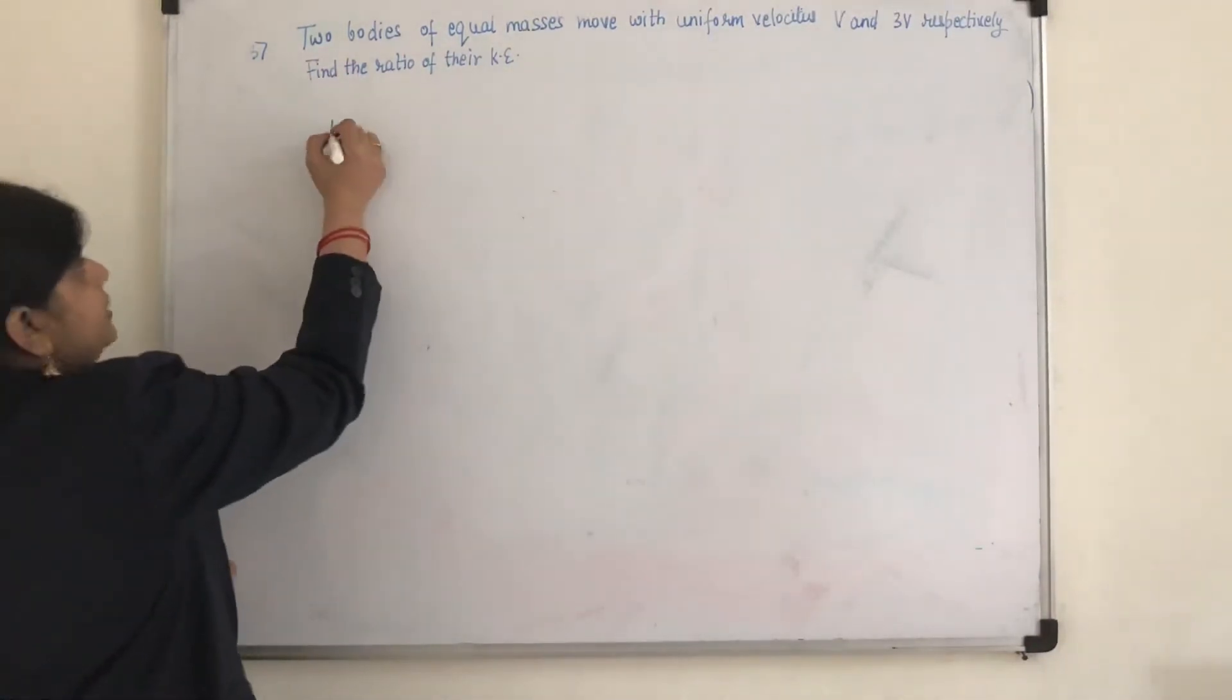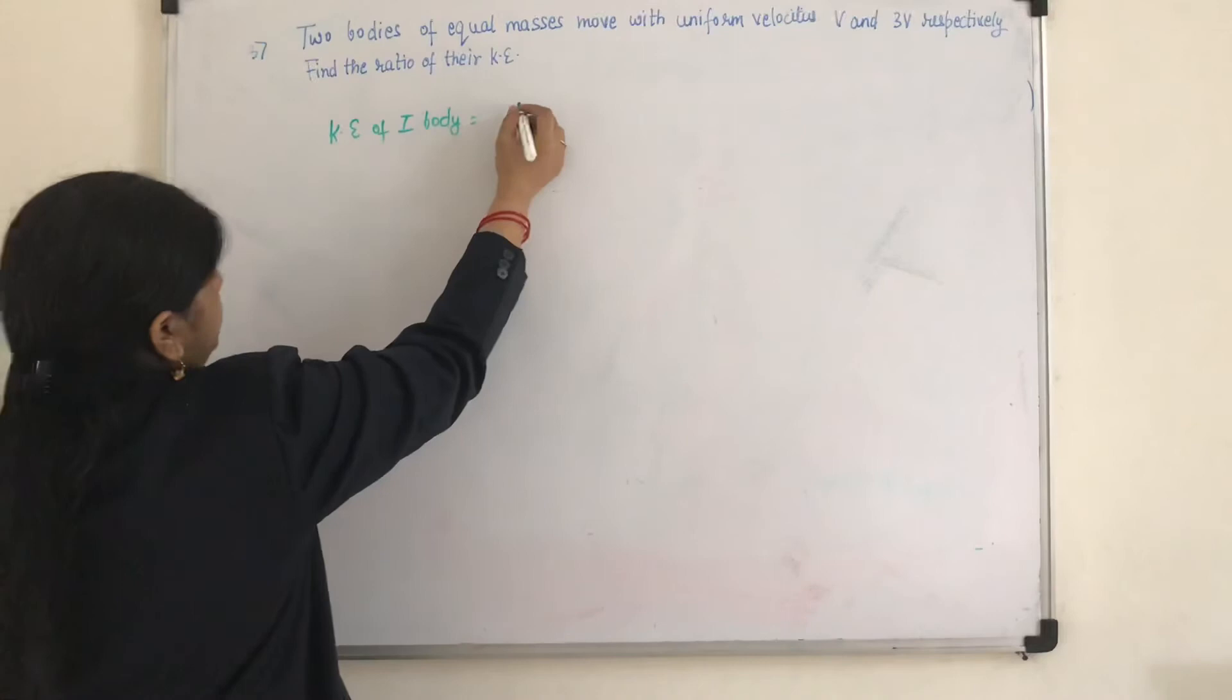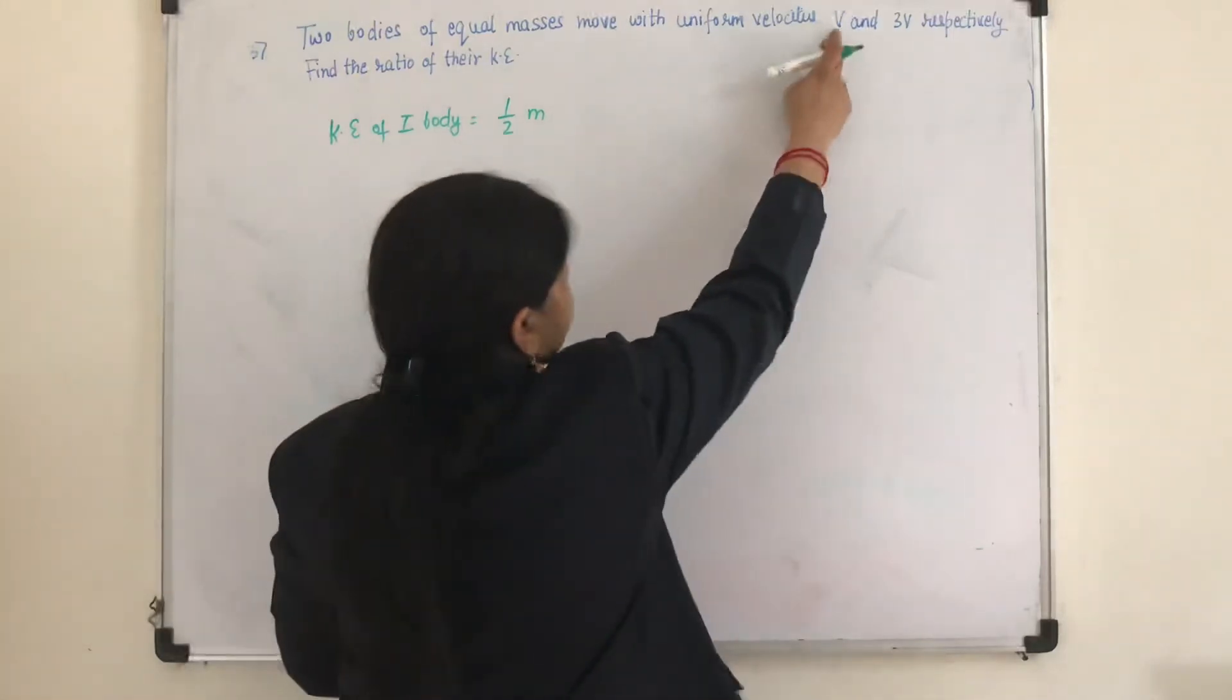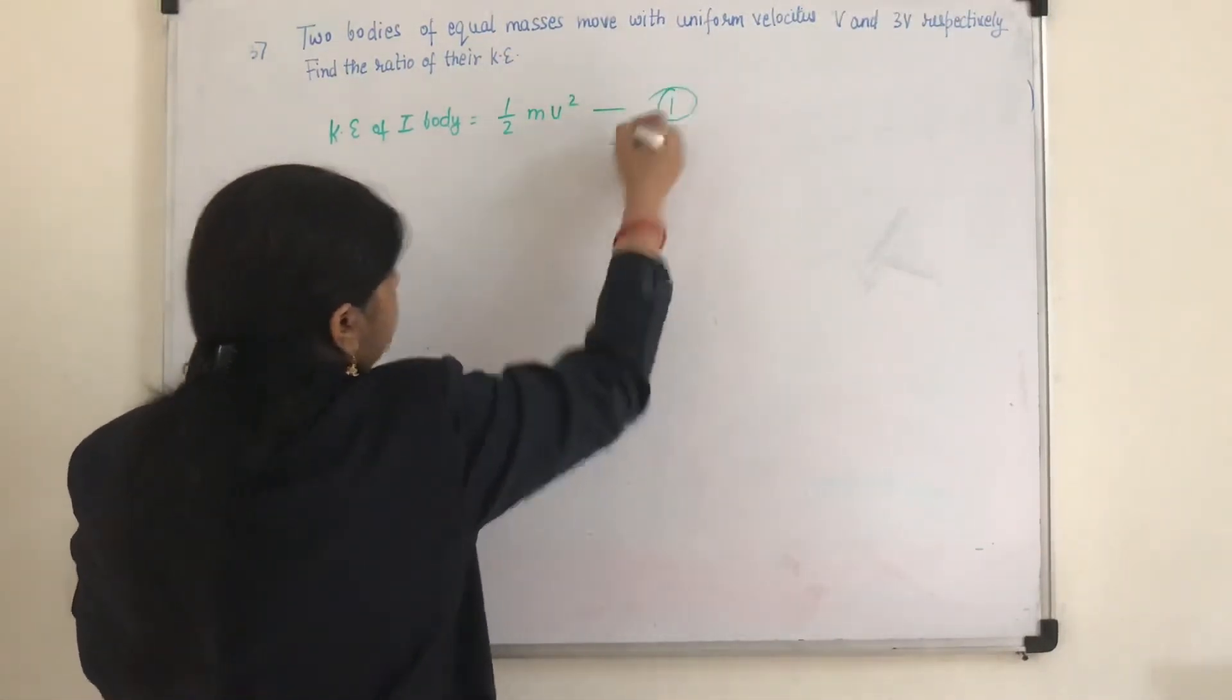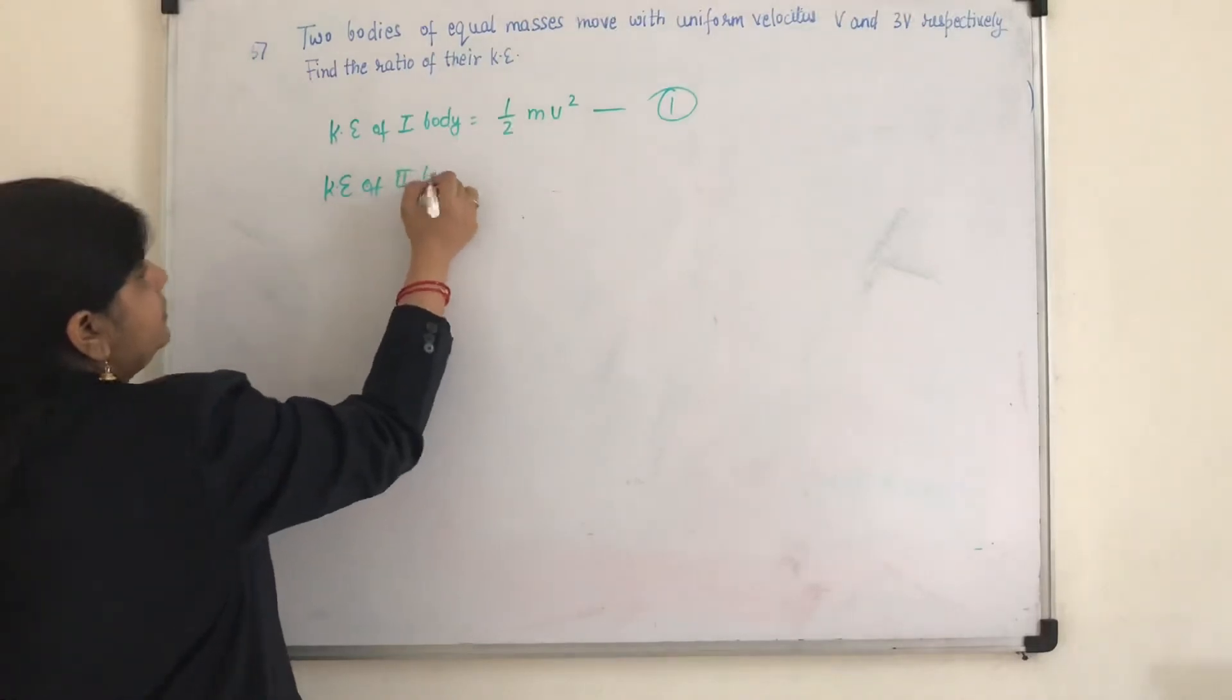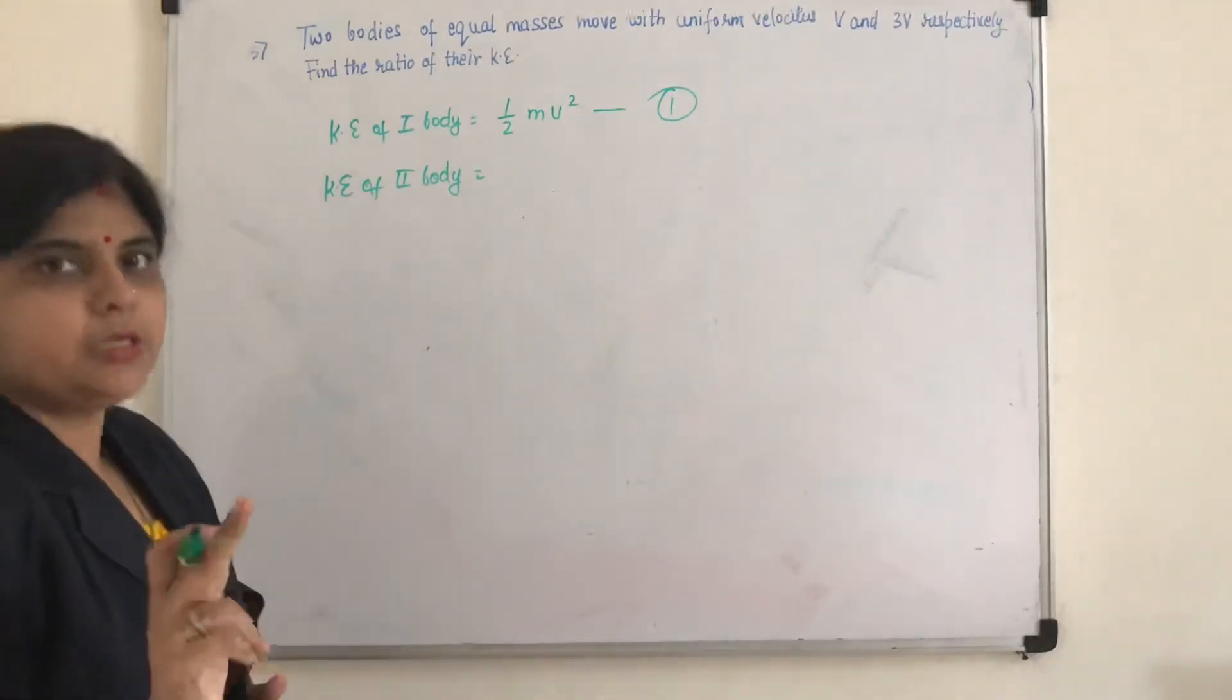So kinetic energy of first body will be, the formula is half mv square. So half m, and what is the velocity of the first body? V square. So kinetic energy of the first body is half mv square. Directly we can read. But what about the kinetic energy of second body? So kinetic energy of second body, the formula is half mv square.